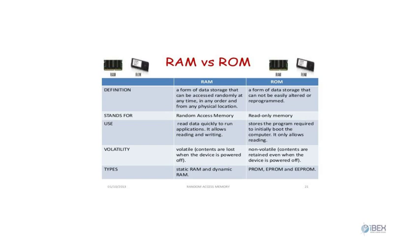There are two types of RAM: Static RAM and Dynamic RAM. ROM — Read-Only Memory — is a form of data storage that cannot be easily altered or reprogrammed. It is used to store the program required to initially boot the computer, allows only reading, and is non-volatile memory — contents are not lost when the device is powered off. There are three types of ROM: Programmable Read-Only Memory (PROM), Erasable Programmable Read-Only Memory (EPROM), and Electrically Erasable Programmable Read-Only Memory (EEPROM).